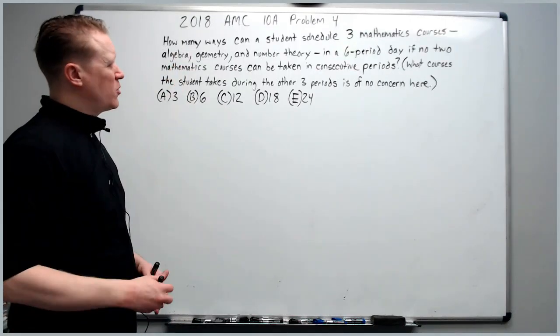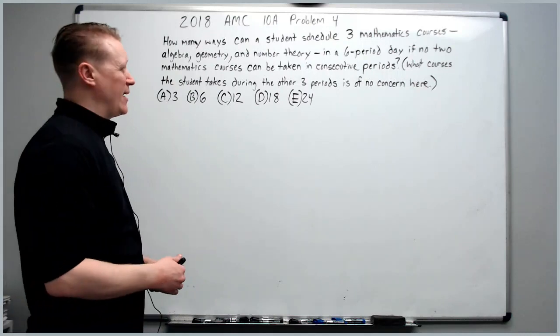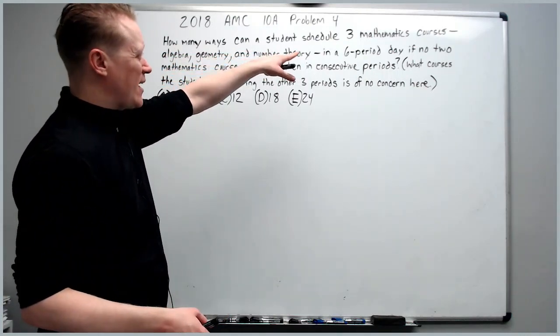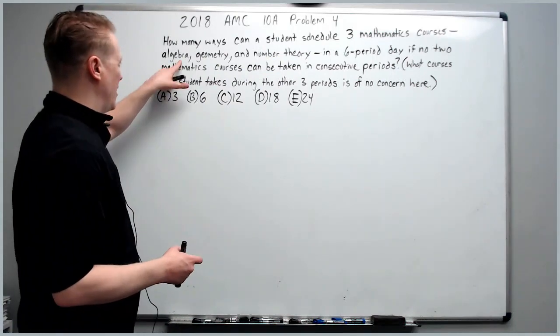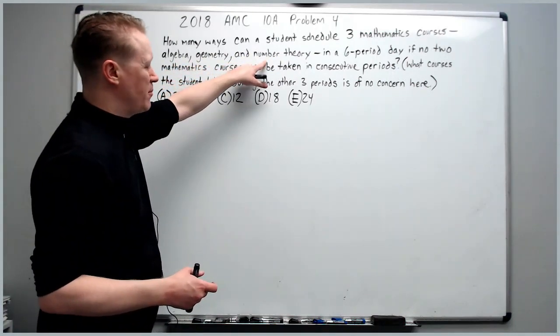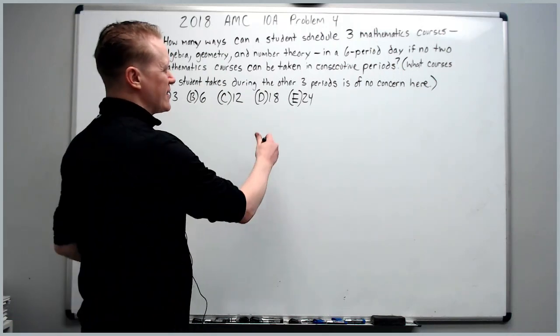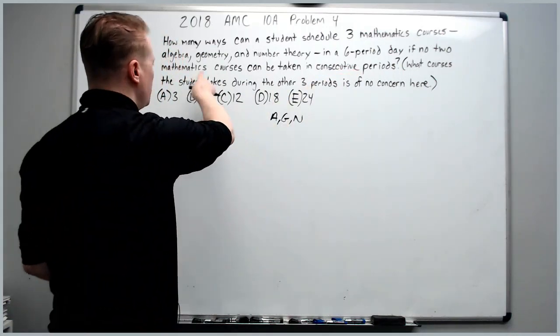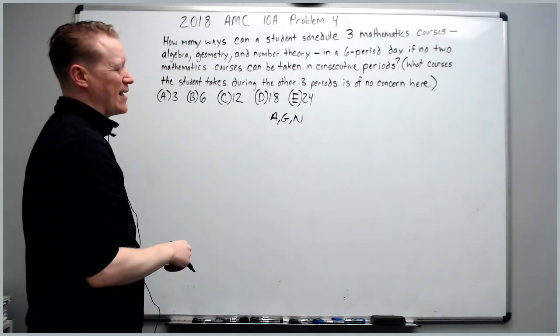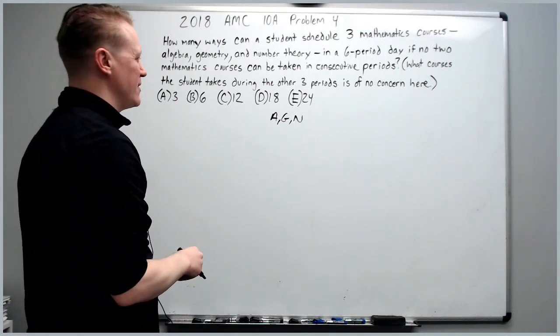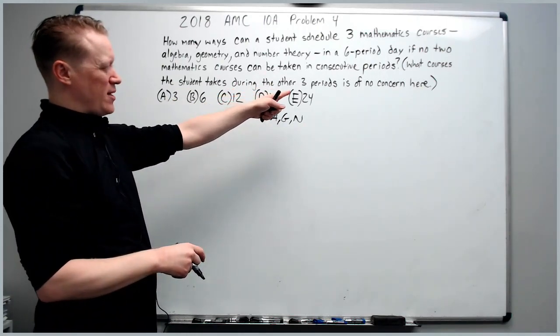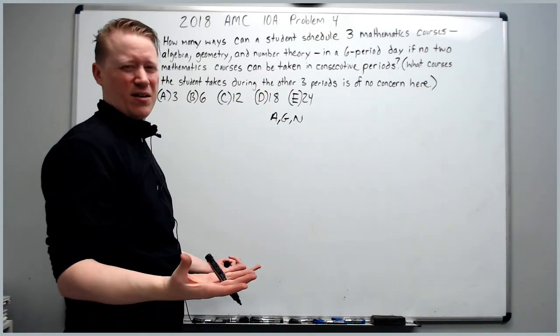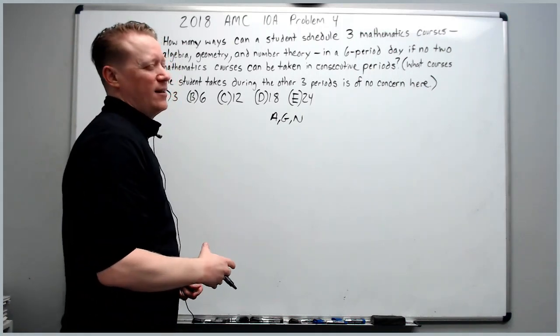And now, problem number 4 in the 2018 AMC 10A. How many ways can a student schedule 3 mathematics courses, algebra, geometry, and number theory, in a 6-day period, if no 2 mathematics courses can be taken in consecutive periods? What courses the student takes during the other 3 periods is of no concern here. I mean, of course. Do other classes really matter? All right.